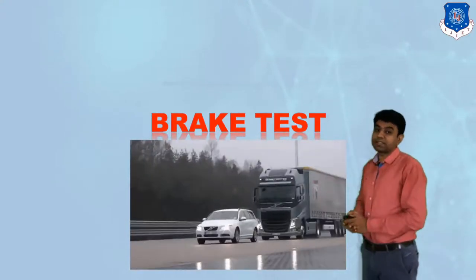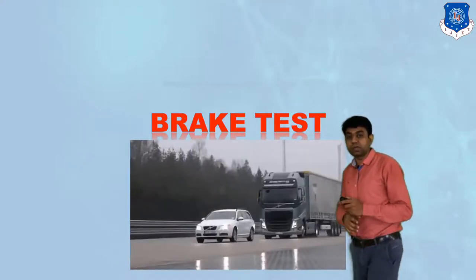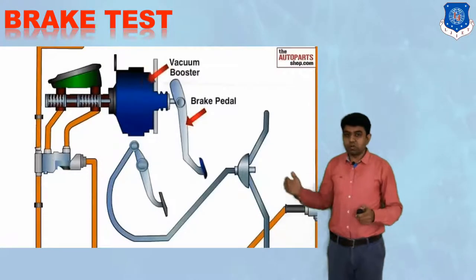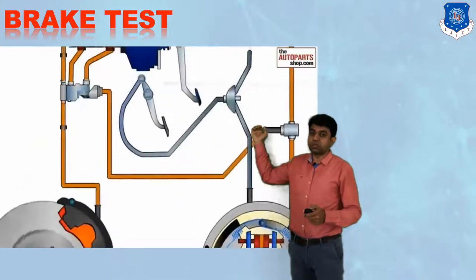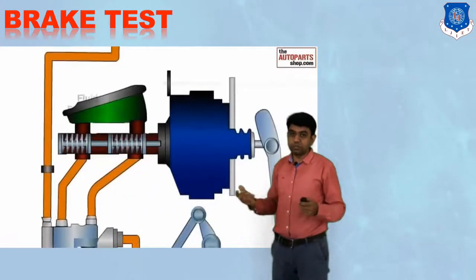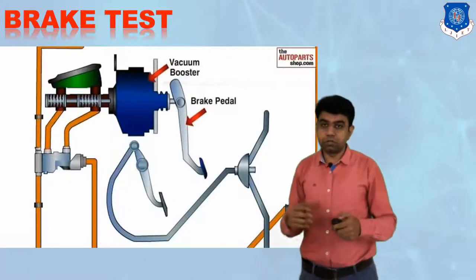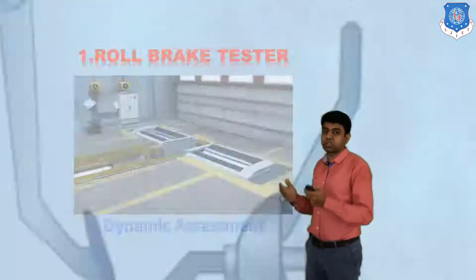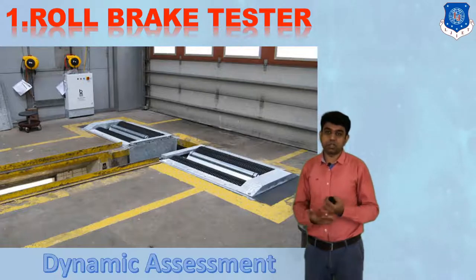Now let us understand the next important test — the brake test. Brake testing is carried out to ensure the safety of the vehicle, making it a prime aspect. Most vehicles nowadays have hydraulic brakes, under which the master cylinder supplies fluid at high pressure, distributed through a fluid reservoir through a control valve. This allows shifting pressure to different drums or discs of the brake. We have two types of apparatus: one is the roll brake type and another is the plate brake tester.